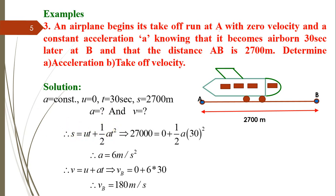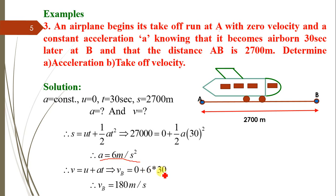Using s = ut + ½at²: 2700 = 0 + ½ × a × (30)², giving a = 6 m/s². Then using v = u + at: v = 0 + 6 × 30 = 180 m/s. So with a constant acceleration of 6 m/s², the airplane takes off with a final velocity of 180 m/s.